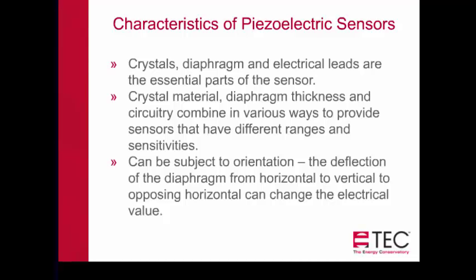Piezoelectric sensors can be subject to orientation. If you have the gauge sitting horizontal on a table, the diaphragm is set to read zero. When you tip the gauge vertically so it's standing on end, the weight of the diaphragm and everything connected with it changes. We need to understand the orientation because it can affect how the pressure sensor responds. Even though the weight change is very small, it can still affect the values we see.